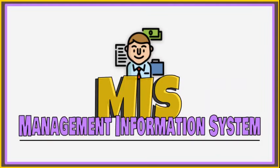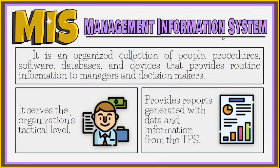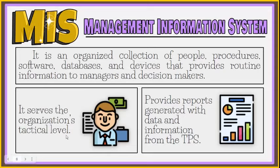Our next type of system is the Management Information System, or MIS. It is an organized collection of people, procedures, software, databases, and devices that provides routine information to managers and decision makers. Management information systems are usually used at the tactical level, which includes employees in the middle of the organization's management hierarchy. MIS typically collects data and information generated from the TPS to provide routine, summary, and exception reports.